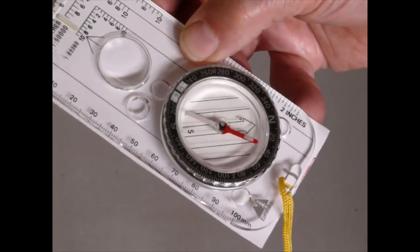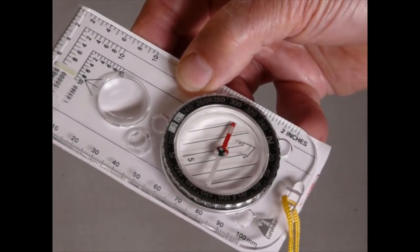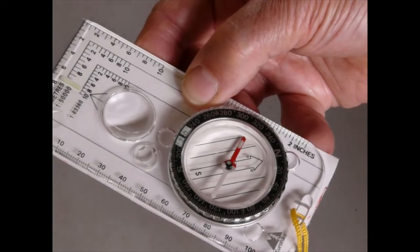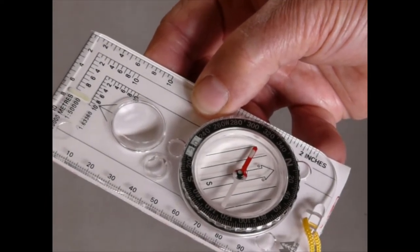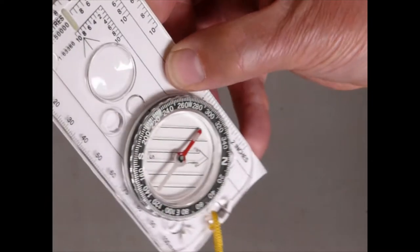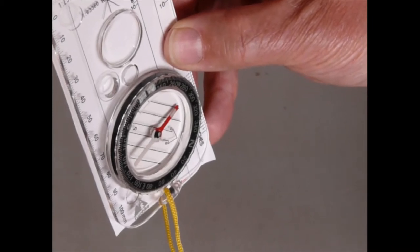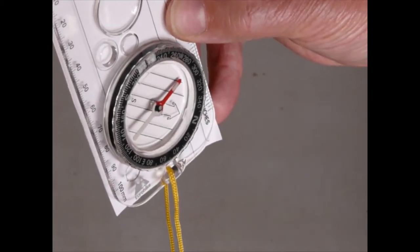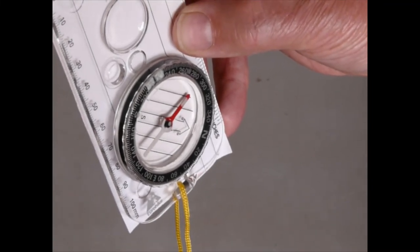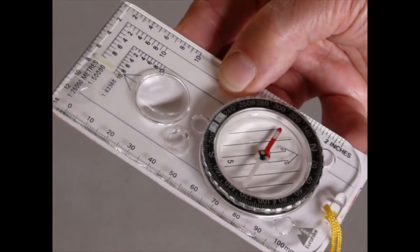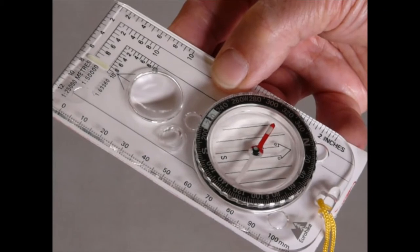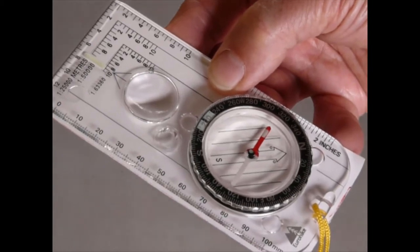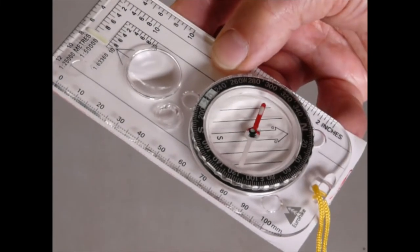The first thing that the youngster does when you give a compass like this, they want to try and use it like a radio, so they'll hold it in the vertical position like this, like a telephone. This will stop it working. So the first thing to instruct youngsters with is to hold it flat in their hand.